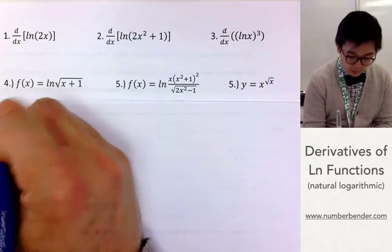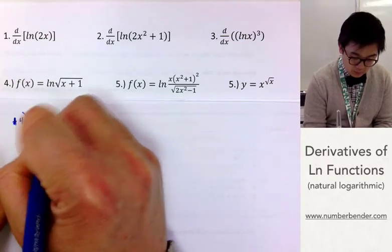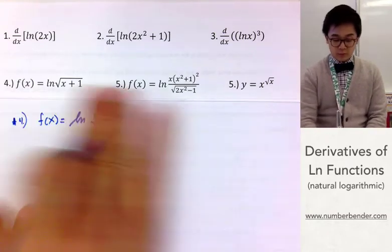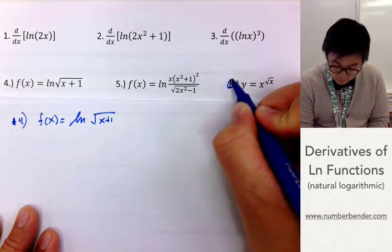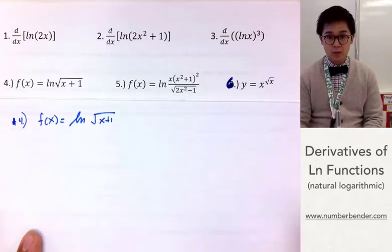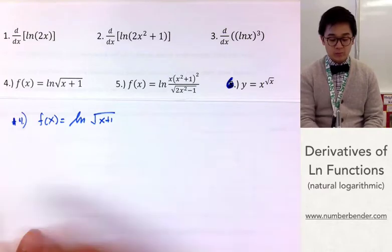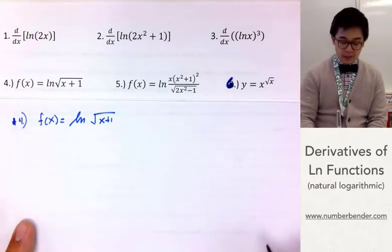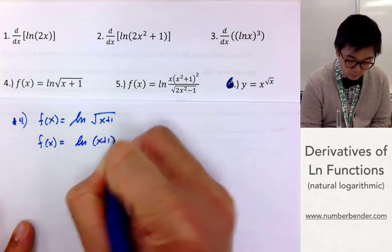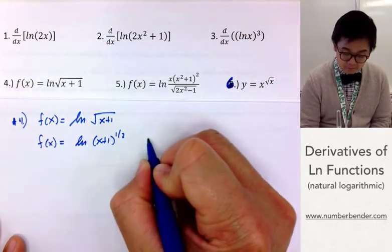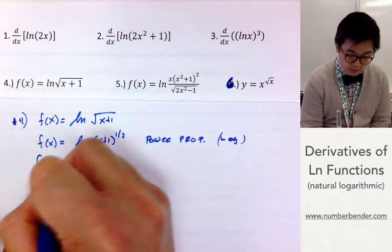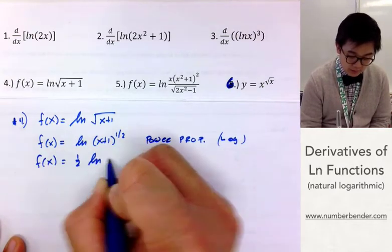For problem number 4, we have f(x) equal to ln of the square root of (x + 1). For problems 4, 5, and 6, we are going to use the properties of logarithm — or expansion of logarithms — to differentiate the functions. First, let's modify the number 4 function into ln of (x + 1) raised to the 1/2, and using the power property of logarithm, we can modify it into 1/2 · ln(x + 1).